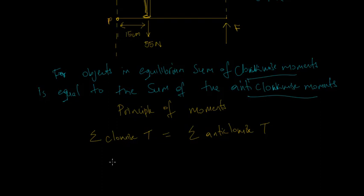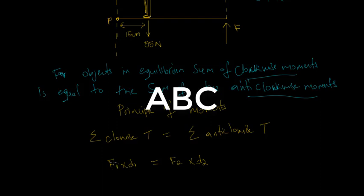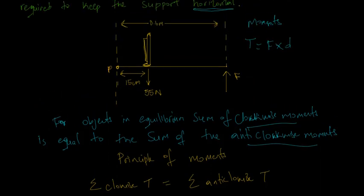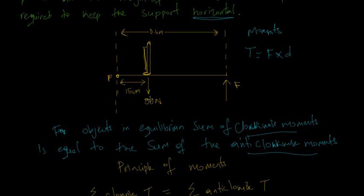Our formula for moments is: moment = force × distance, where force is the force acting and D is the distance from the pivot at which that force acts. So the principle of moments gives us: F1 × D1 = F2 × D2, where F1 and D1 correspond to the clockwise force and its distance from the pivot, and F2 is our anti-clockwise force. Looking at the diagram, we consider the moment due to the television as our clockwise moment.